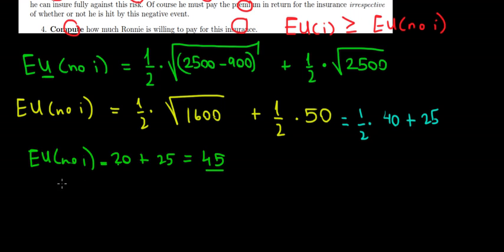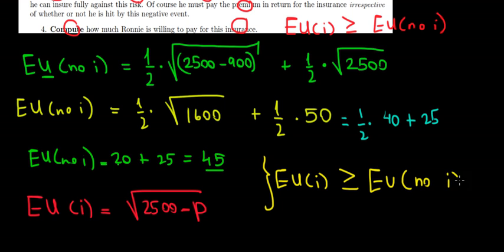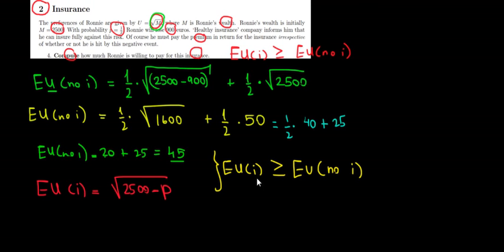Now let's contrast this with the expected utility of having insurance. With insurance, there is no probability of losing money. We keep our full income but pay the premium, so our wealth is 2,500 minus the premium. The expected utility with insurance must be at least as great as without insurance: √(2,500 − premium) ≥ 45.